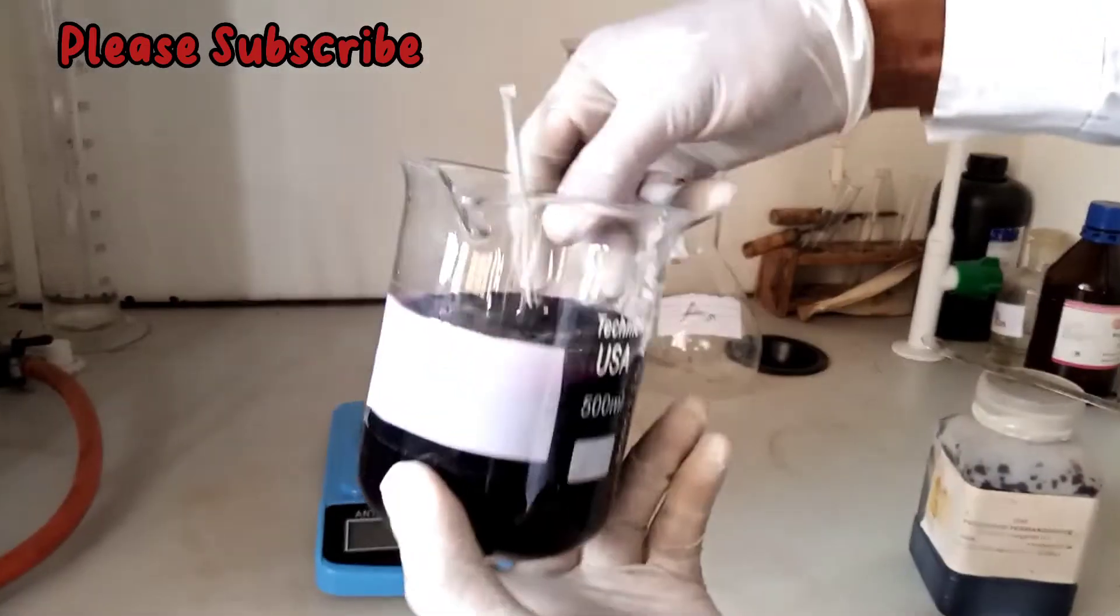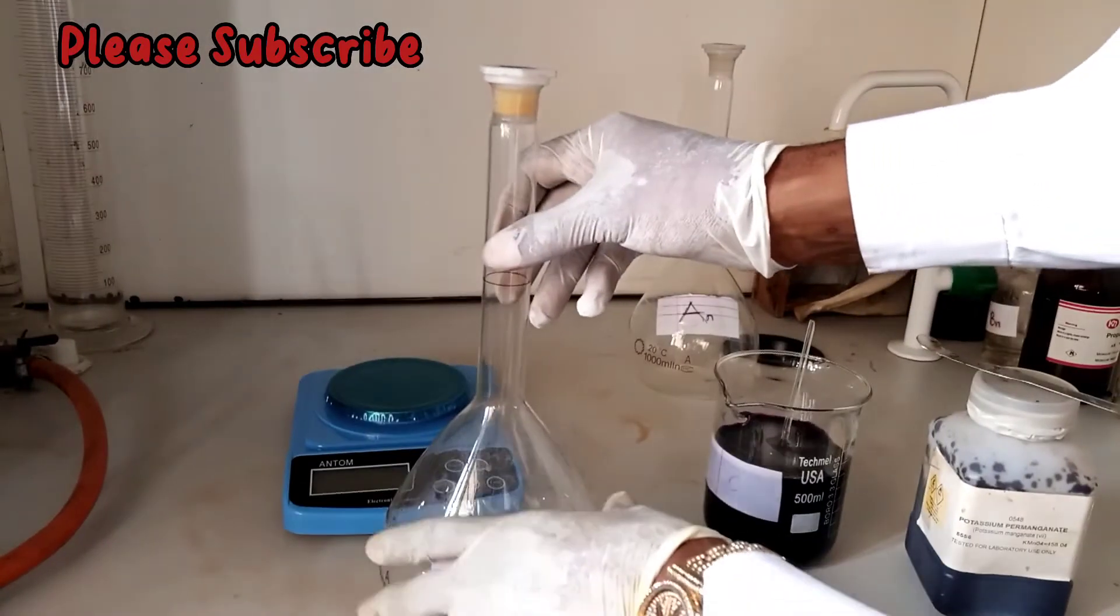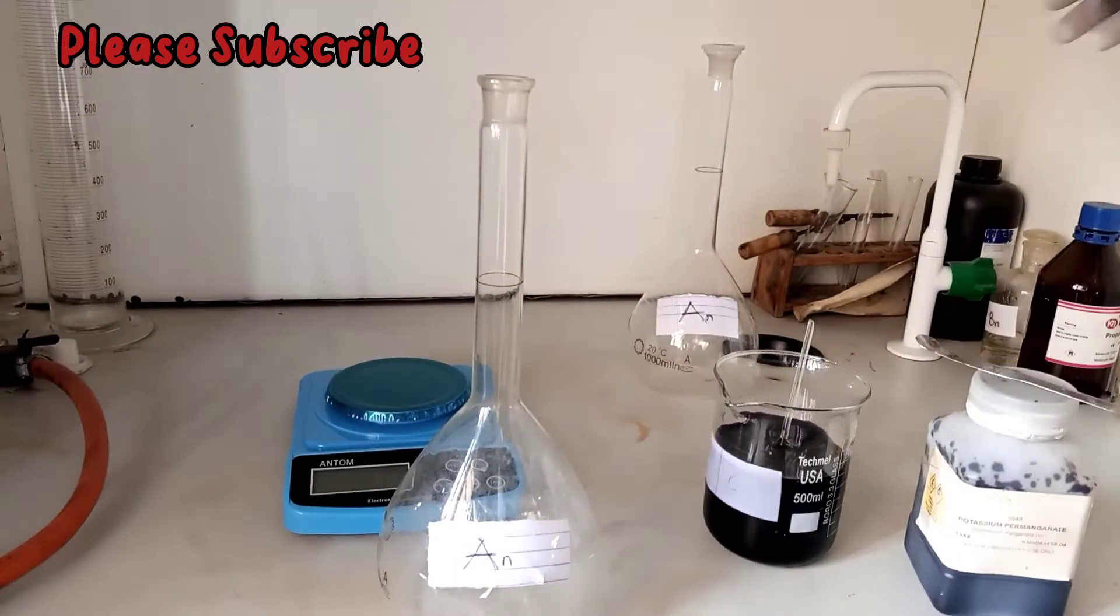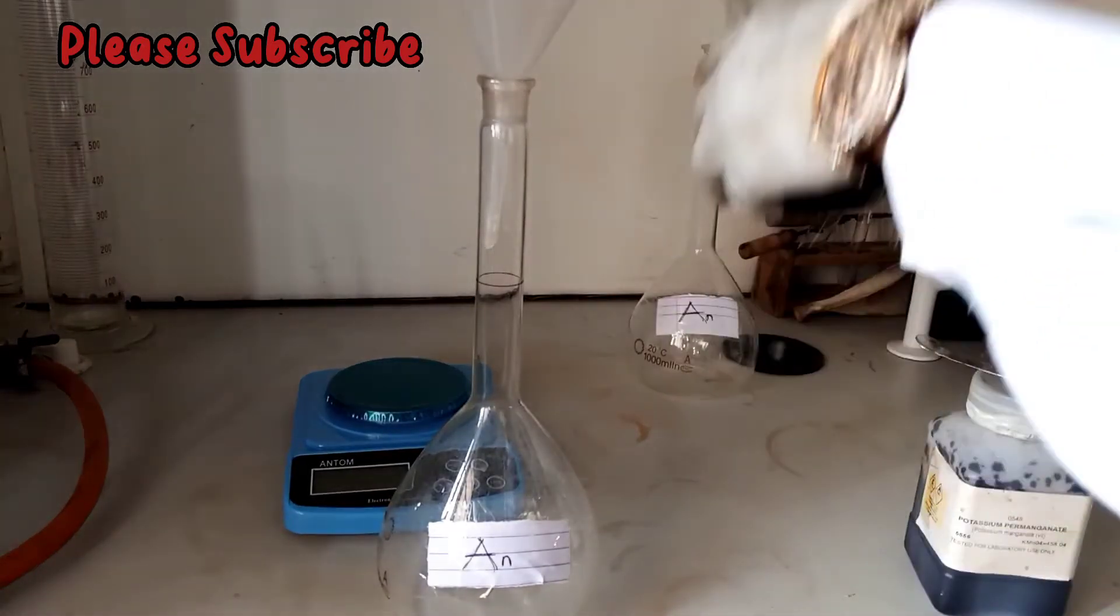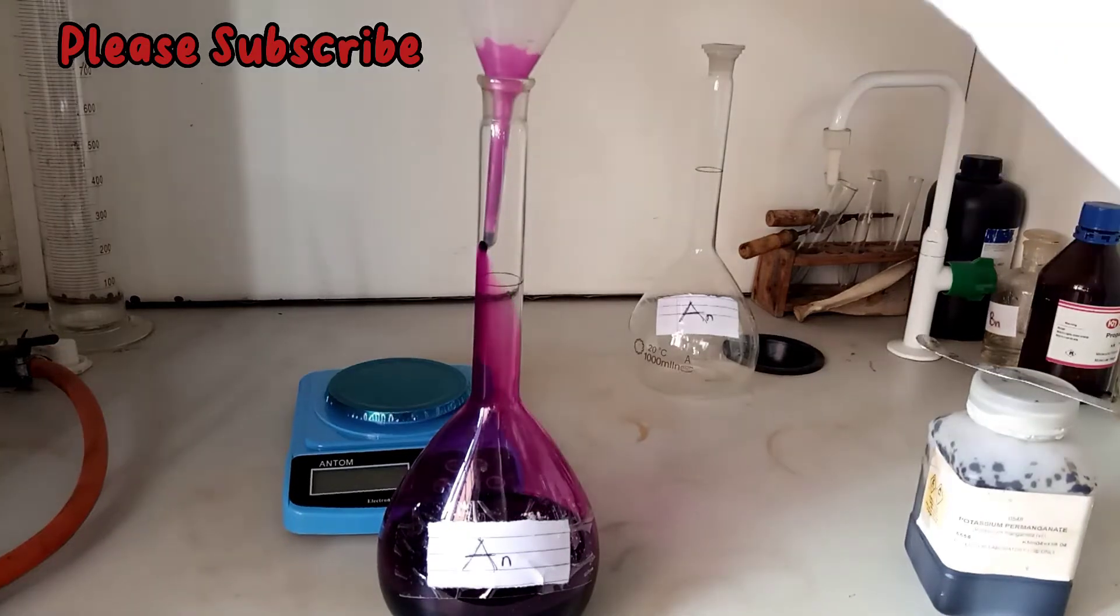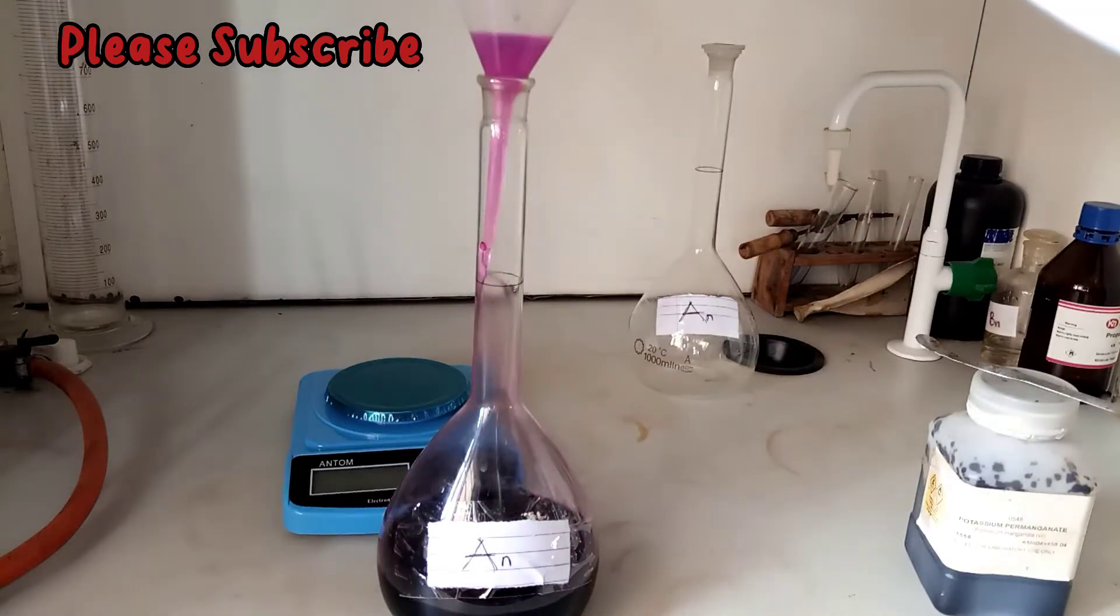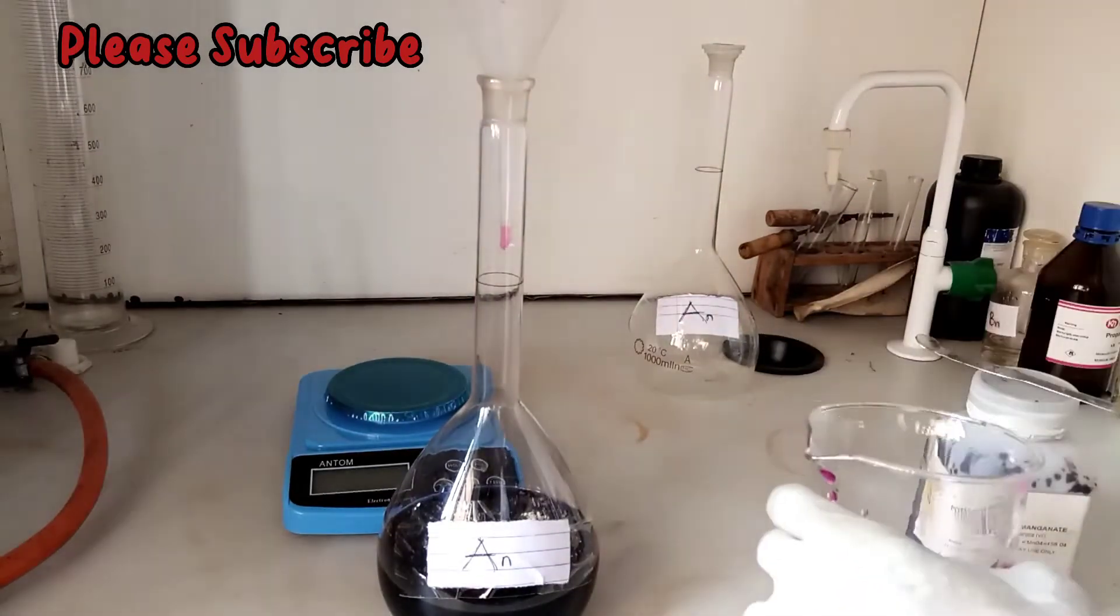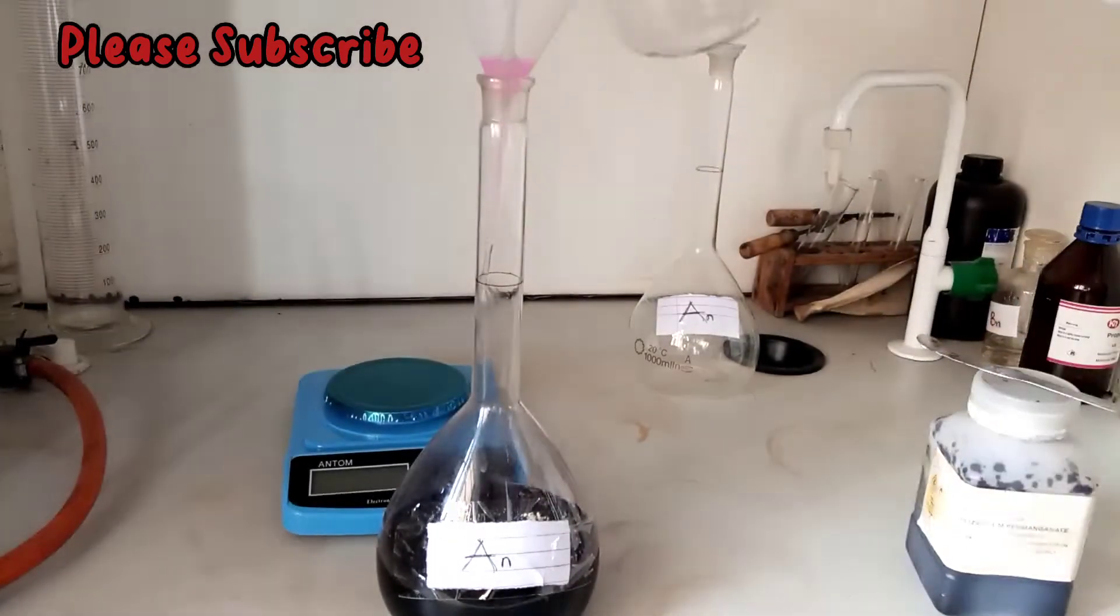After that, this is our standard volumetric flask. This is 1000 ml capacity. Dilute to 1000 ml by adding the prepared solution into it. You rinse the quantity left thoroughly into the standard volumetric flask and dilute with distilled water to the 1000 ml mark there.